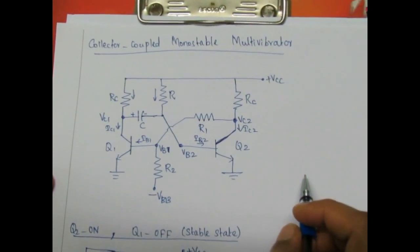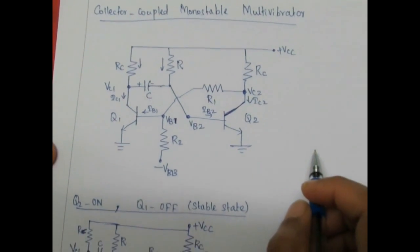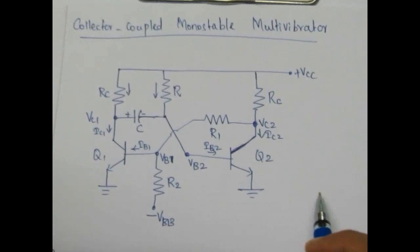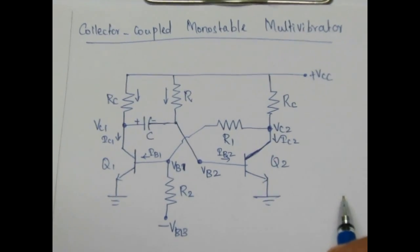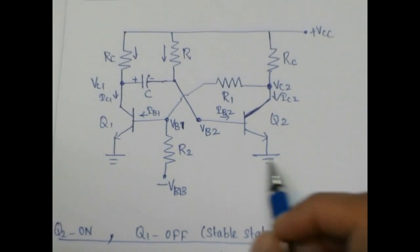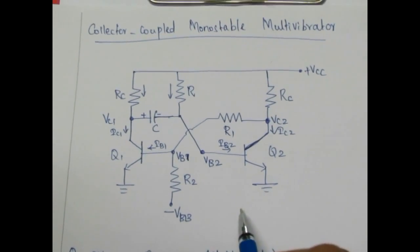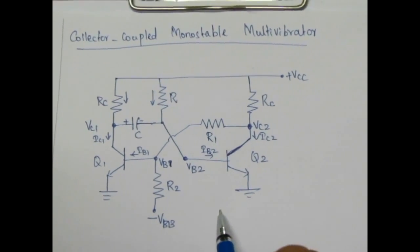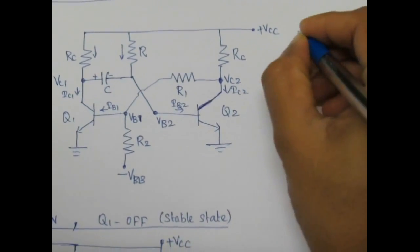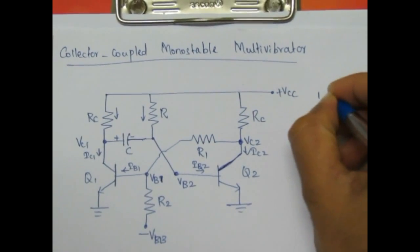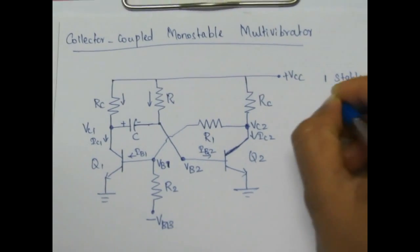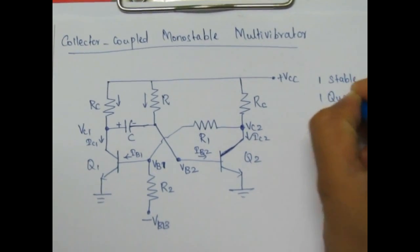In this video we will see how to find the stable state voltages and currents, and quasi-stable state voltages and currents in a collector coupled monostable multivibrator. This is a collector coupled monostable multivibrator circuit. In a monostable multivibrator it consists of one stable state and one quasi-stable state.